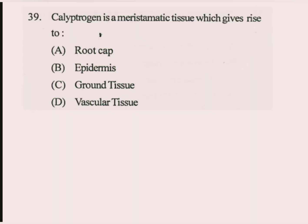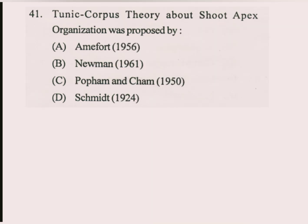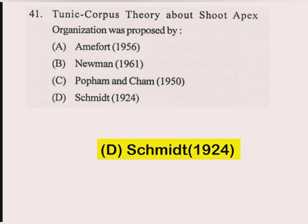Question number 39. Calyptrogen is a meristematic tissue which gives rise to a root cap. Question number 40. Which of the root tissues is large and well developed in monocot root but small or absent in dicots? The answer is Pith. Question number 41. Tunica-corpus theory about shoot apex organization was proposed by? The answer is Schmidt.